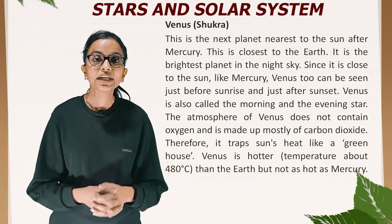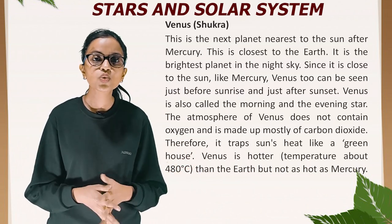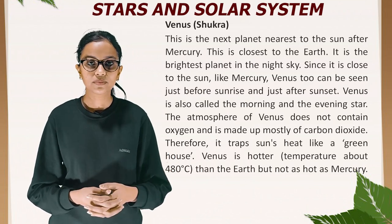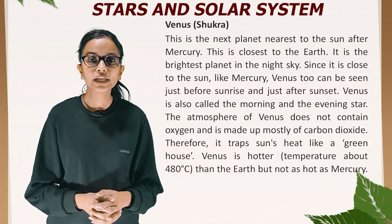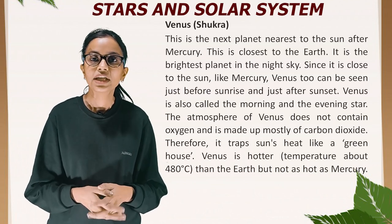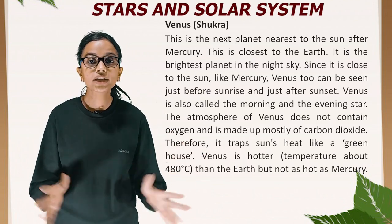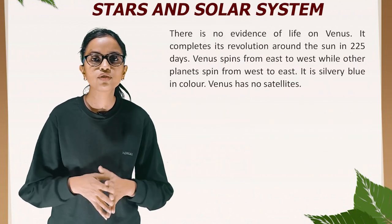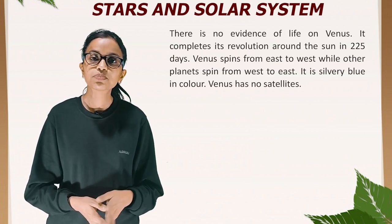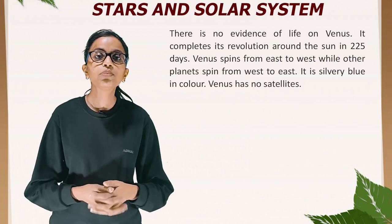Venus is the next planet nearest to the Sun after Mercury and is closest to the Earth. It is the brightest planet in the night sky. Like Mercury, Venus can be seen just before sunrise and just after sunset, so Venus is also called the morning and the evening star. The atmosphere of Venus does not contain oxygen and is made up mostly of carbon dioxide, which traps the Sun's heat like a greenhouse. Venus has a temperature of about 480°C, completes its revolution around the Sun in 225 days, spins from east to west (unlike other planets), is silvery blue in color, and has no satellites.